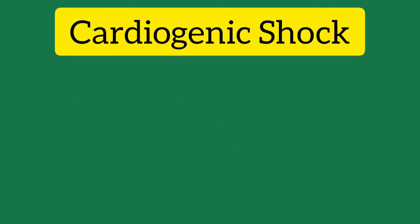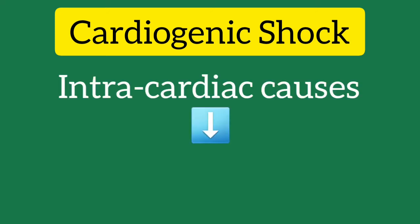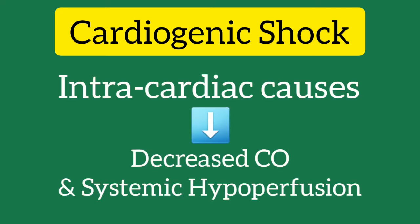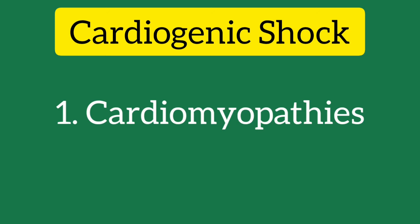Cardiogenic shock is due to intracardiac causes leading to decreased cardiac output and systemic hypoperfusion. Etiologies include cardiomyopathies such as acute myocardial infarction affecting more than 40% of the left ventricle, acute MI in the setting of multivessel coronary artery disease, right ventricular myocardial infarction, fulminant dilated cardiomyopathy, or cardiac arrest due to myocardial stunning.